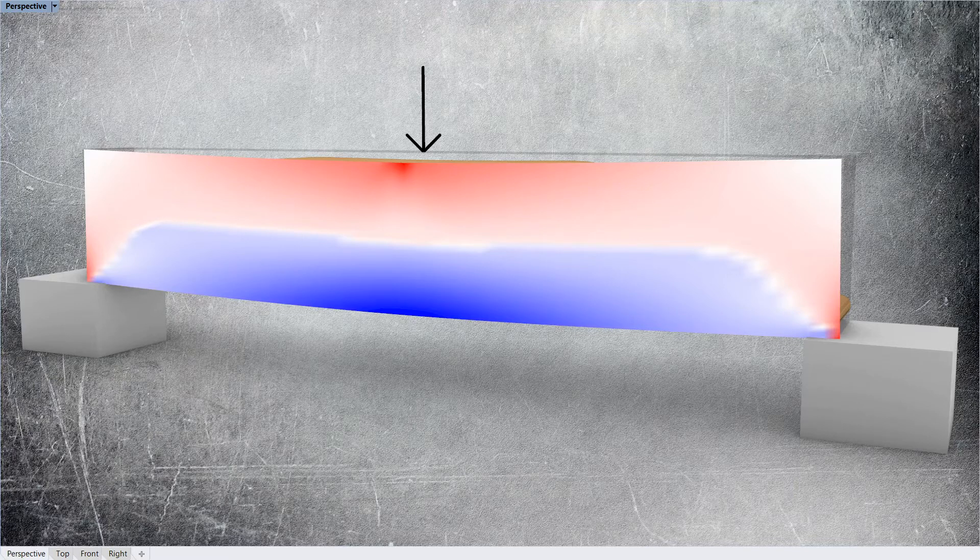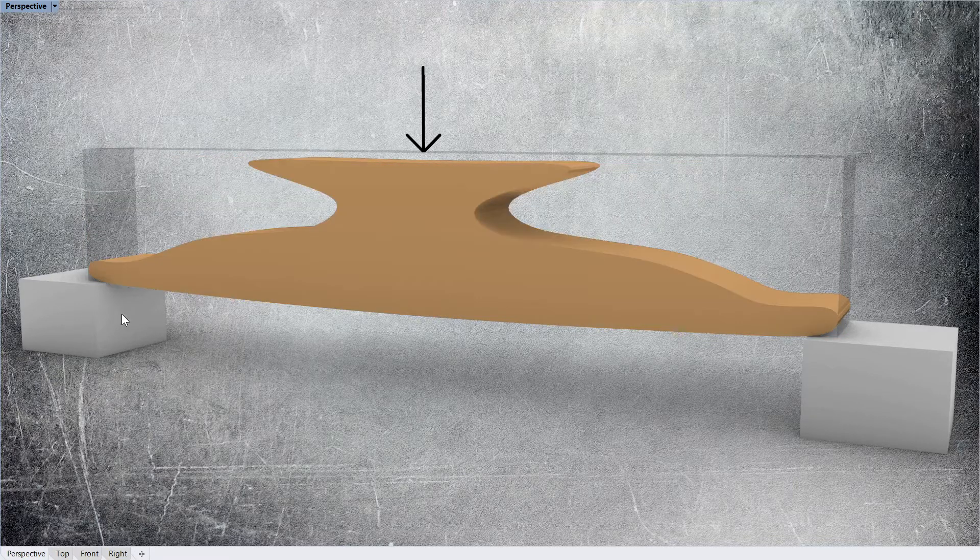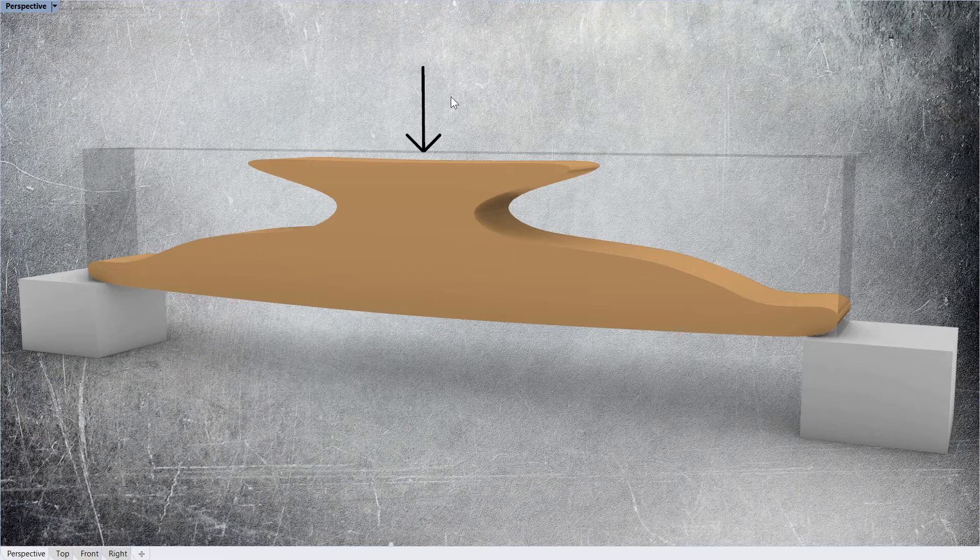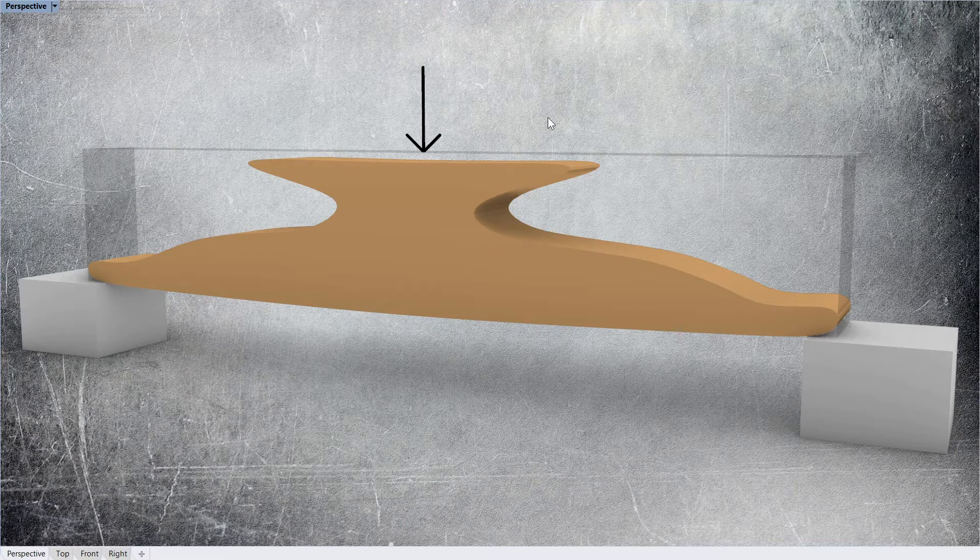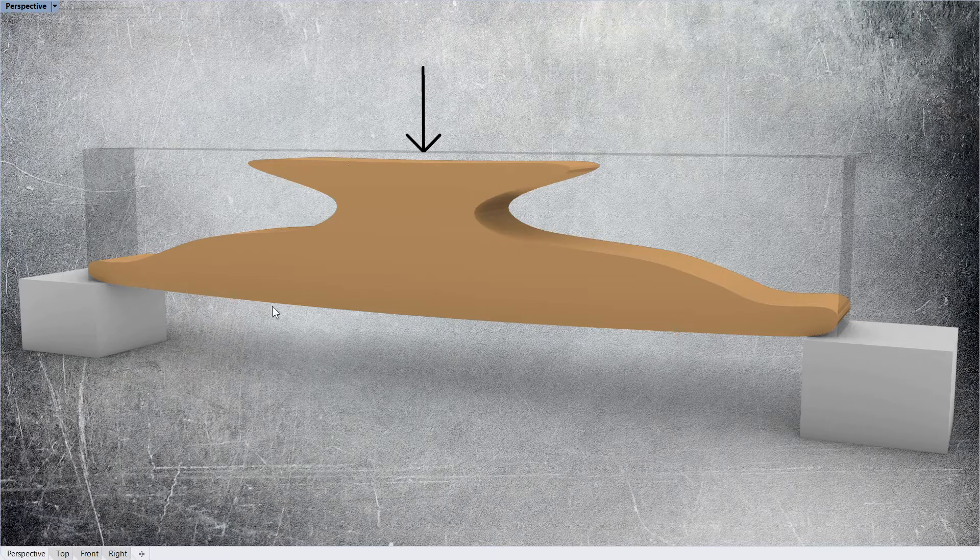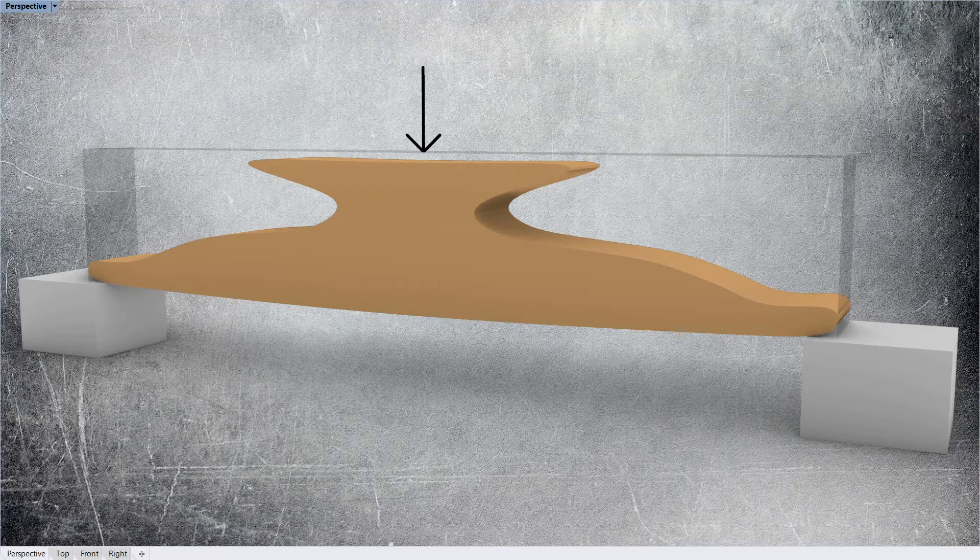So you can see that if I turn off the stress plot, that's a first go at the algorithm. So it's kept material where the red was and the blue was, so compression and tension material.